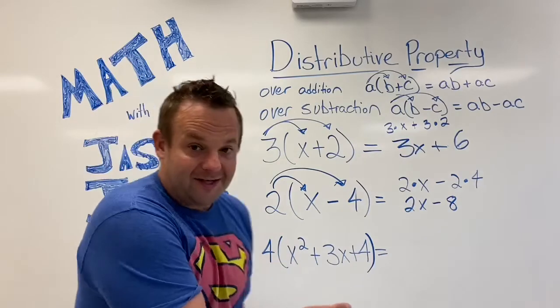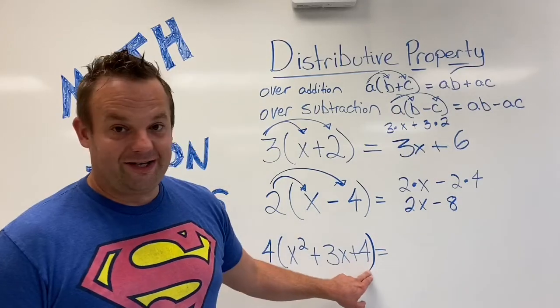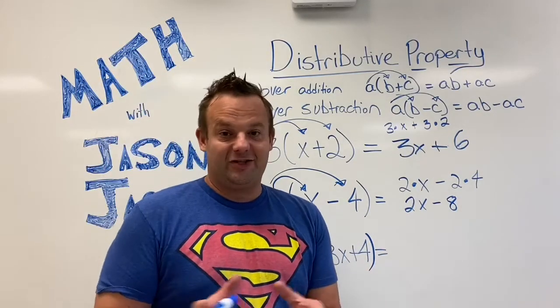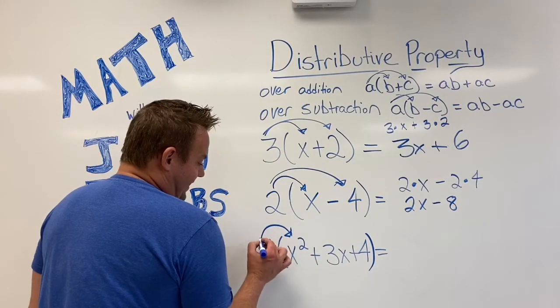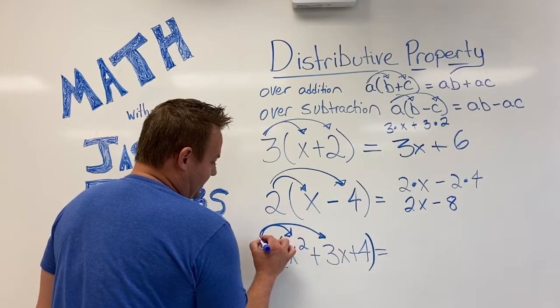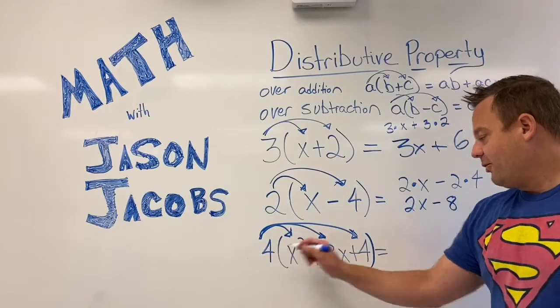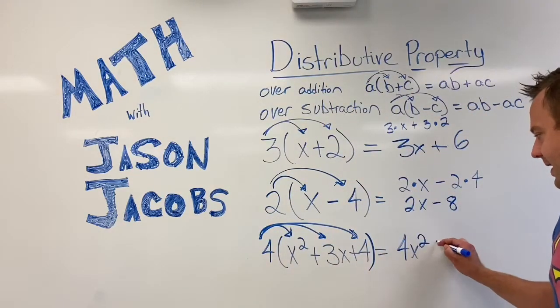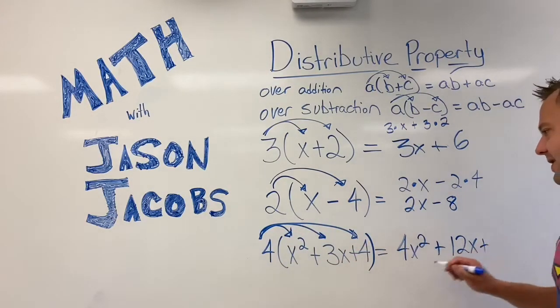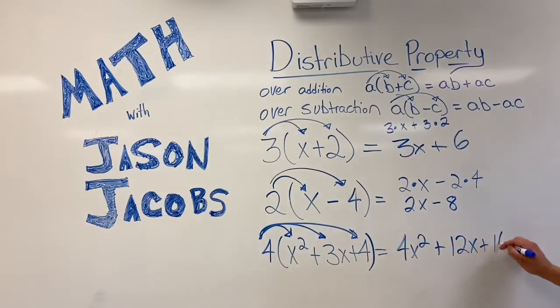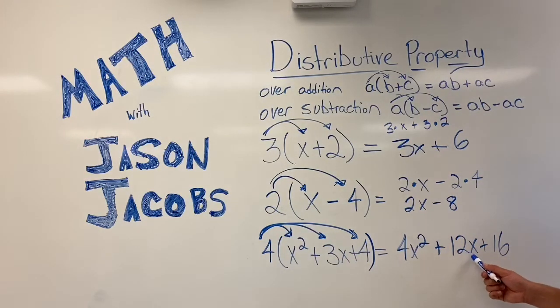Hey, this is a pretty advanced one here. You guys think you can do it? I think you can do it. Notice we're distributing over 1, 2, 3 terms. Terms are separated by addition or subtraction. So it's not too hard. We just go: the 4 distributes to the X squared, the 4 distributes to the 3X, and the 4 distributes to the 4. So let's do it, guys. 4 times X squared is 4X squared plus 4 times 3X is 12X plus 4 times 4 is 16. So notice how we distribute it out. And we get 4X squared plus 12X plus 16.